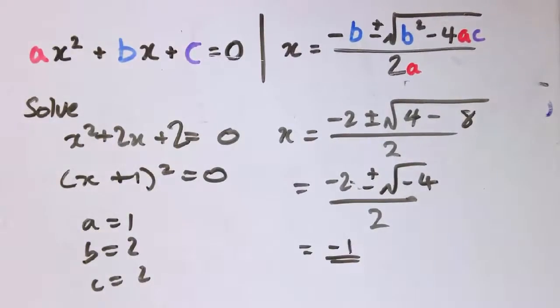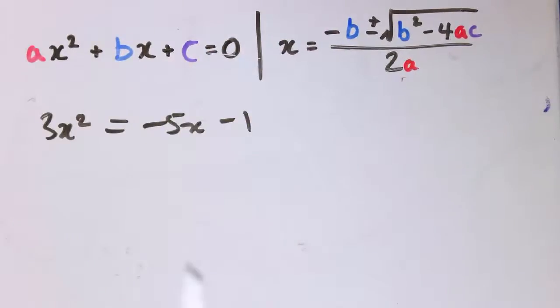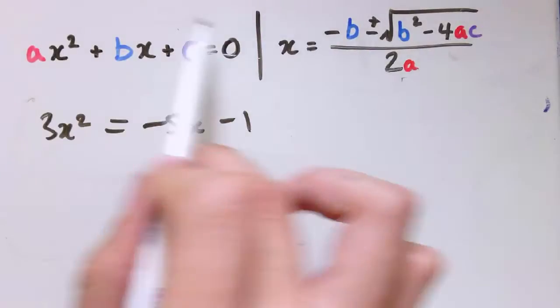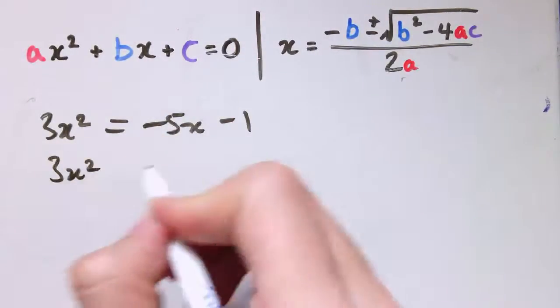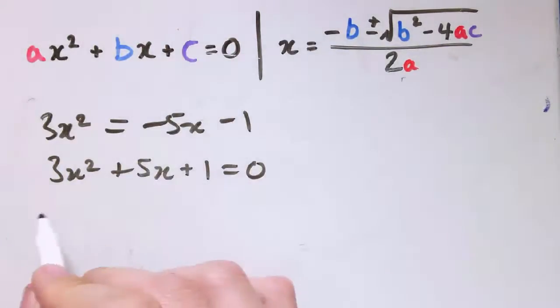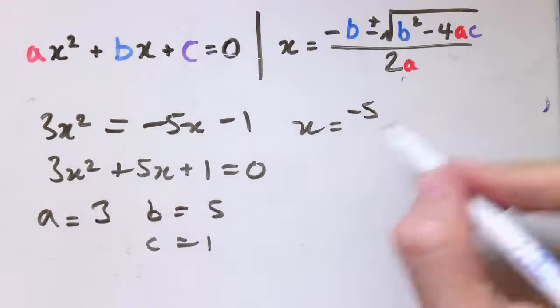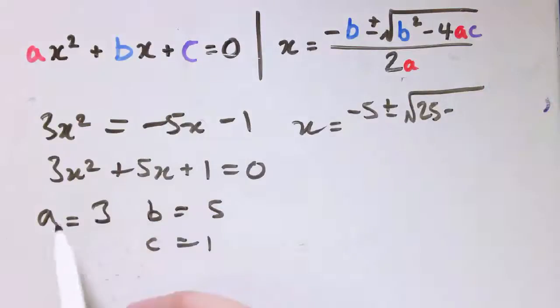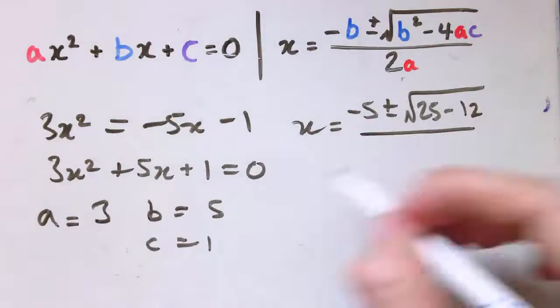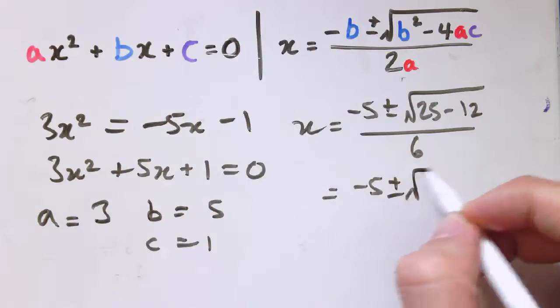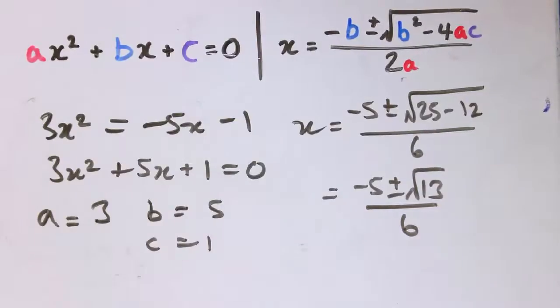Hopefully you can now use the quadratic formula to solve quadratic equations. But I do just want to do one last example just to make the point here. 3x squared is minus 5x minus 1. If the quadratic isn't in this form, we must start by putting it into that form. So let's write it as 3x squared plus 5x plus 1 equals 0. And then these terms are all in the right order, x squared, x and the constant term. I can now say a is 3, b is 5, c is 1, and continue as before. So if it's not all equal to 0, put it all equal to 0 first. Then we have here x is minus 5 plus or minus the square root of 5 squared is 25 minus 4 times 3 times 1 that's 12, all divided by 2 times 3 is 6. So that's minus 5 plus or minus the square root of 13 over 6.